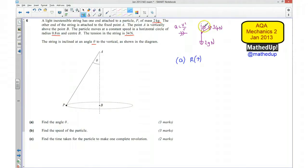That means all the forces upwards are equal to all the forces downwards. So 34 cos theta equals the weight, which is 2g.